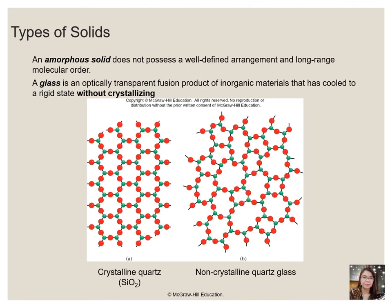The constituents of a solid can be arranged in two general ways. They can form a regular repeating three-dimensional structure called a crystal lattice, producing a crystalline solid, or they can aggregate with no particular order, forming an amorphous solid — from the Greek word meaning shapeless. These two examples show crystalline quartz and non-crystalline quartz.